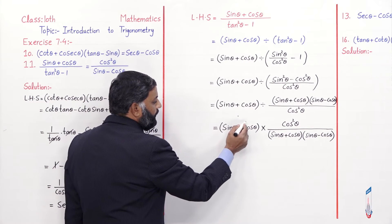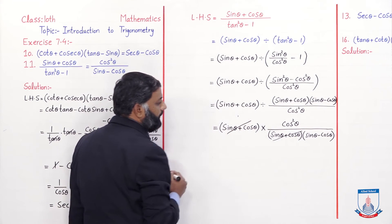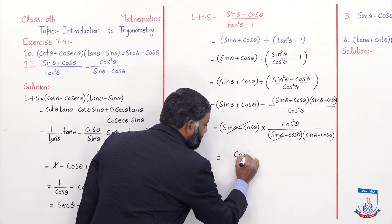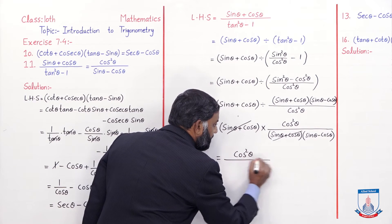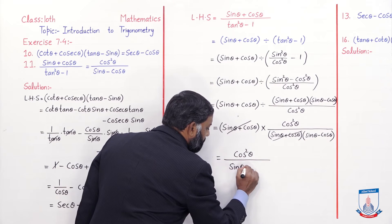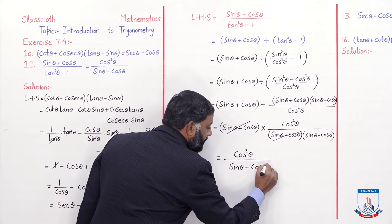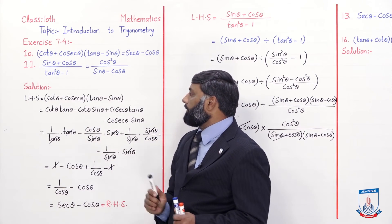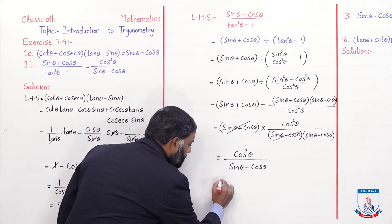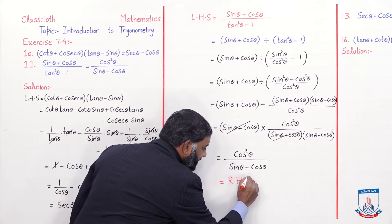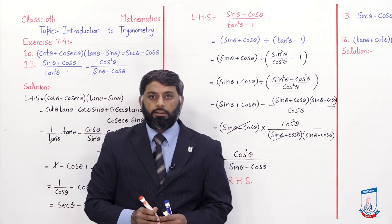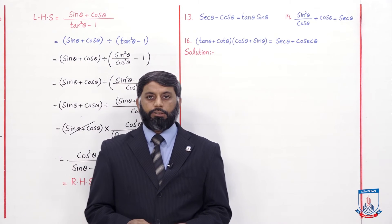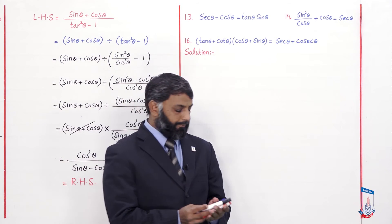sin θ + cos θ divided by (sin θ + cos θ)(sin θ − cos θ). Now sin θ + cos θ cancels with sin θ + cos θ, and remaining is cos²θ / (sin θ − cos θ). Students, this is the same right hand side as given in the question, so we write = RHS. This identity is also verified.